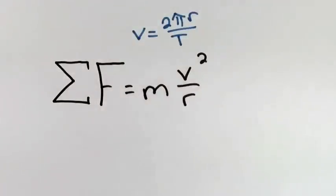Keep in mind that sometimes you have to substitute in for v the formula speed equals 2 pi r over the period.